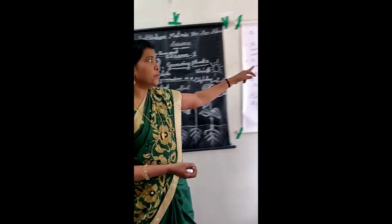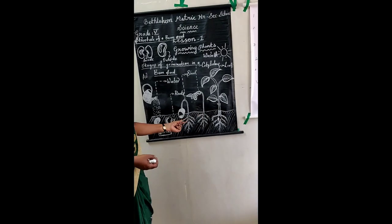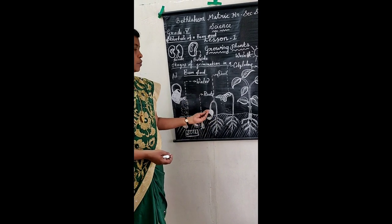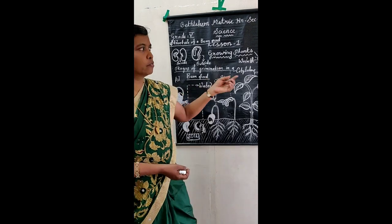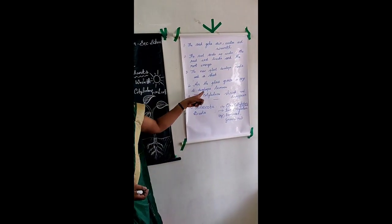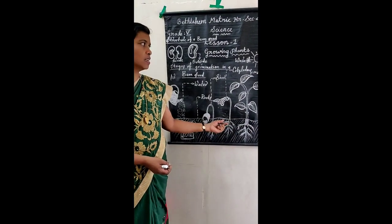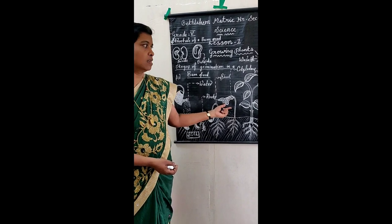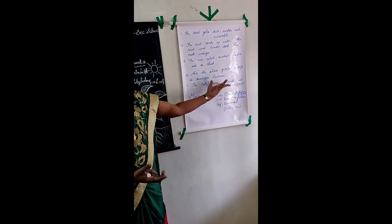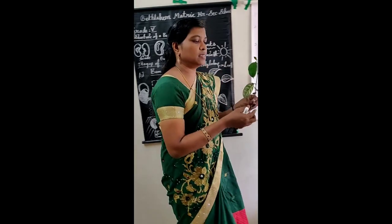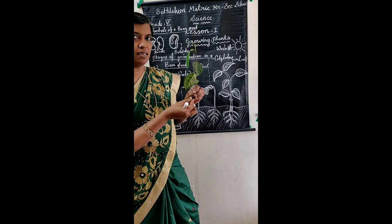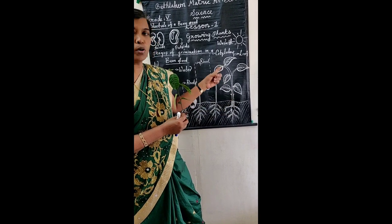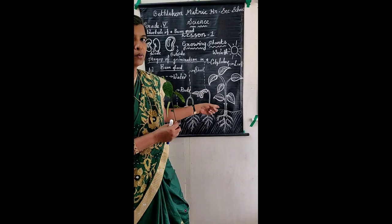Third, the new plant develops roots and a shoot. The roots grow under the soil and the shoot grows above the soil. Fourth, as the plant grows in size, it develops leaves and the leaves are ready to prepare the plant's own food. Fifth, the cotyledons shrink and disappear. After that, we cannot see the cotyledons. The seed grows into a new plant and prepares its own food.